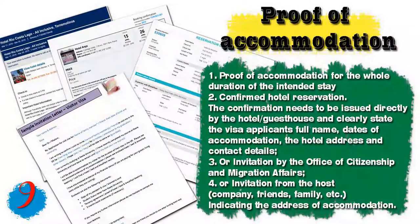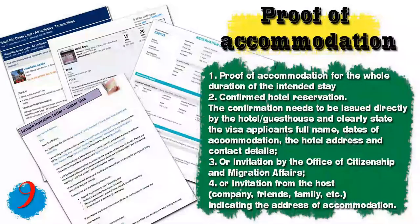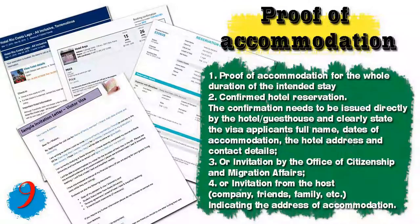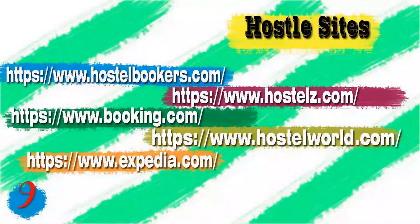Number nine, you will need a proof of accommodation for the whole duration of the intended stay. It should be a confirmed hotel reservation. The confirmation needs to be issued directly by the hotel or guest house and clearly state the visa applicant's full name, dates of accommodation, the hotel address, and contact details. If you don't have a hotel reservation, you will need an invitation from the office of citizenship and migration affairs or an invitation from a host — which can be a company, friends, or family — indicating the address of accommodation.